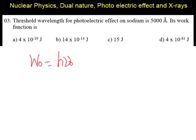H nu naught where nu naught is the threshold frequency. If frequency is not given, we can write this as C by lambda naught because C is equal to nu into lambda.